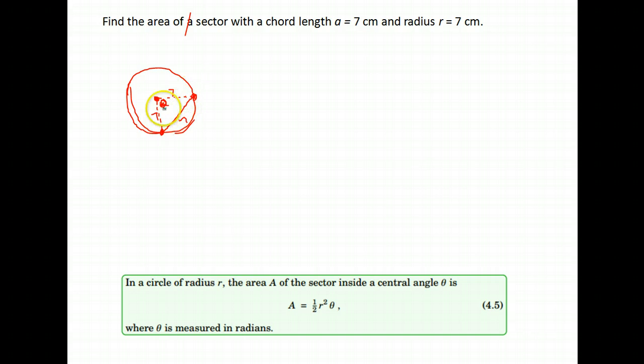And in an equilateral triangle, all the angles are also the same length. They're always 60 degrees. So, I know that that's a 60 degree angle, and all I have to do now is convert it to radians, and I'm fine.